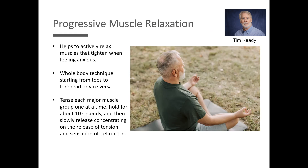I'm going to talk about progressive muscle relaxation. When we're anxious, the muscles in our body tighten. When we use this technique, we can relax the muscles, which will ease the feeling of anxiety. Starting at your feet or your head, begin tensing those muscles. Hold them for a count of about 10 seconds, then release. Work through all the muscles from top to bottom and allow yourself to feel that release as you let those muscles go. It takes maybe 10 minutes to do throughout your entire body and can make a big difference in reducing anxiety.